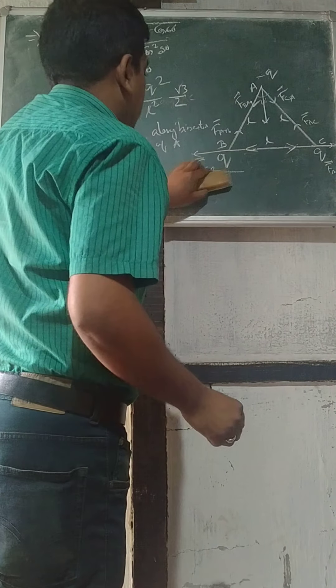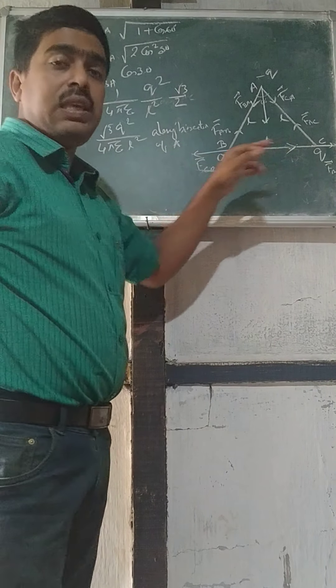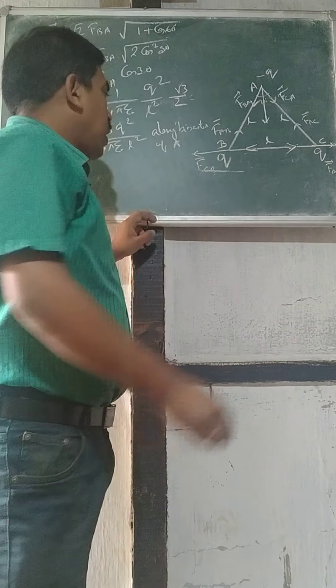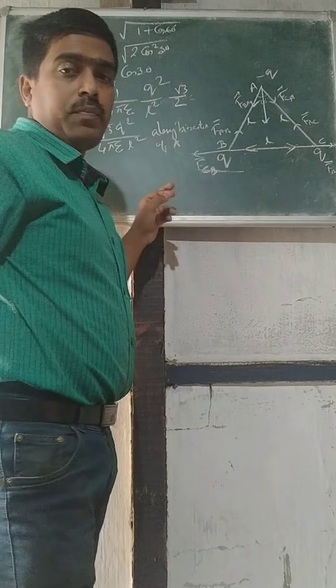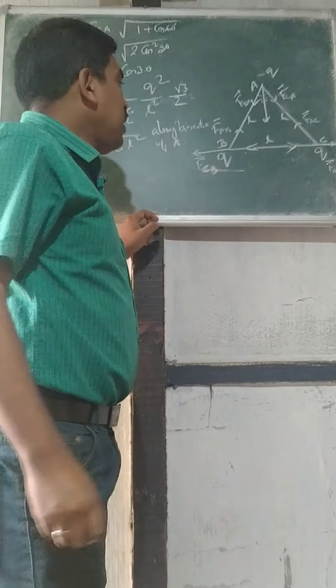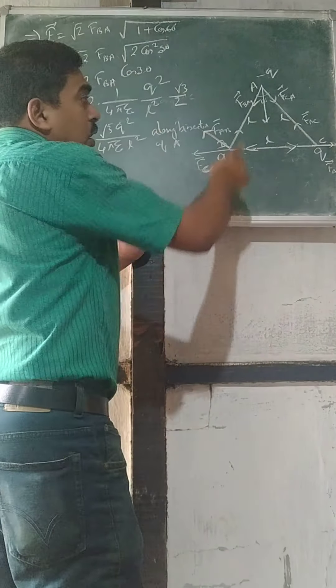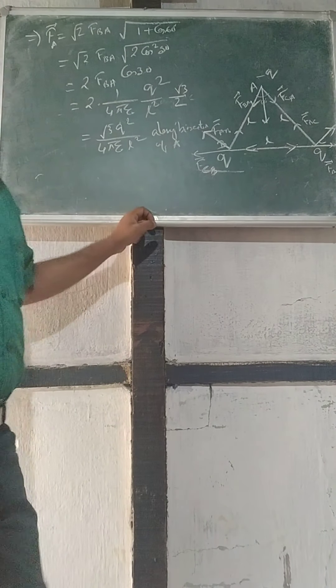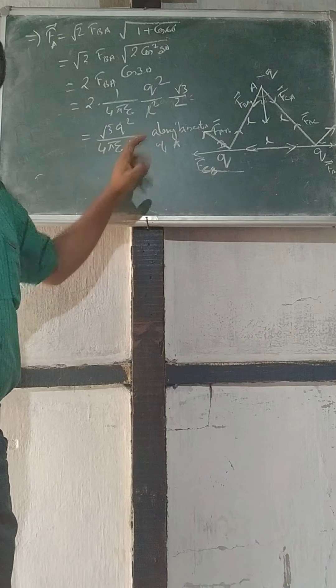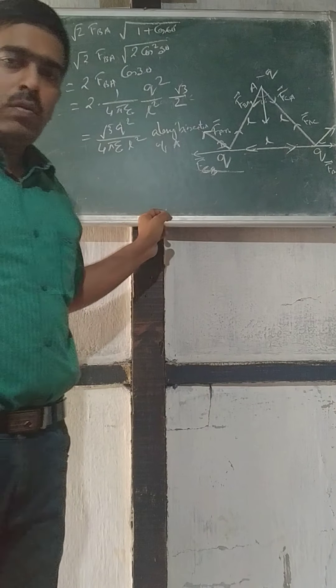Force on A is given by this expression. Similarly, you can calculate force on B and C. First you do B. If you calculate FCB, then FBA, then again vector sum vector will be this way resultant. And for C, result will be this direction. Okay, so these two you can do. Okay, thank you.